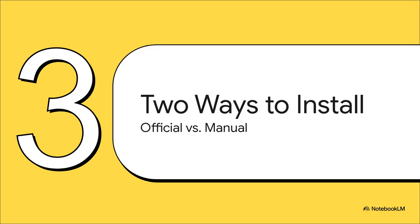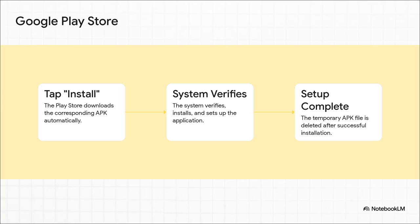Now, how does an APK actually get from the developer's computer onto our phones? There are really two main paths it can take — the official, super easy route, and the more hands-on manual route. For most of us, the only way we've ever installed an app is through the Google Play Store — you tap install, and everything else just happens behind the scenes. The Play Store sends the right APK, your phone checks it to make sure it's safe, installs it, and then gets rid of the installation file. You never even see the APK. It's totally seamless.